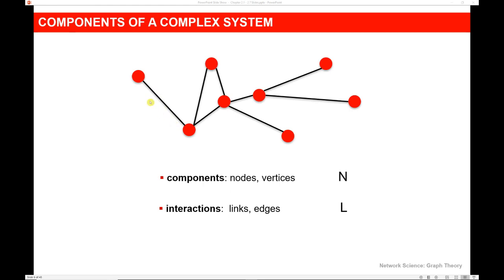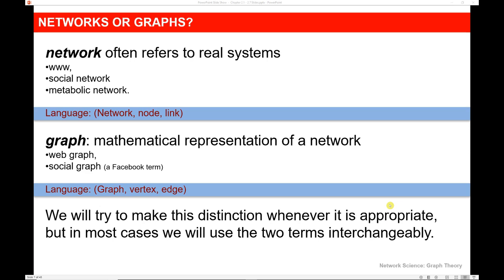So a link could represent that two people have acted in the same movie, that two people have published a research paper together, or that people share information at work. When we combine the nodes and the edges, we have our system, our network, or our graph. There is a distinction between network and graph, although we're going to use the terms interchangeably. A network often refers to the real system — for example, the worldwide web, a social network, or a metabolic network — and uses the terms nodes or links. A graph is a mathematical representation of a network, using the language of vertex and edge.